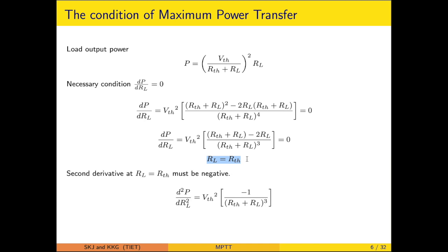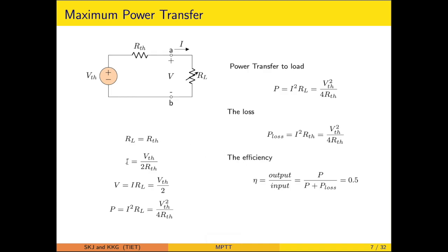To validate that this is a maximum rather than a minimum condition, a second derivative test is required. The second derivative must be negative at RL equals RTH — the point obtained from the first derivative being 0. The negative sign confirms that the condition corresponds to a maximum of the function, which in this case is maximum power transfer. Substituting RL equals RTH gives current i equal to VTH divided by 2RTH, which equals Imax divided by 2.